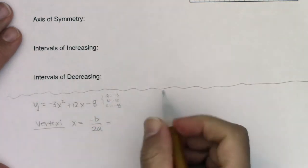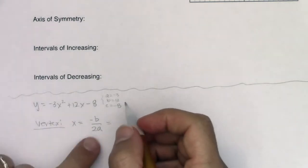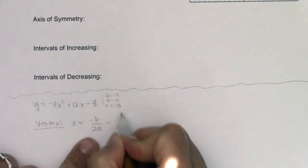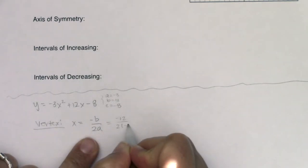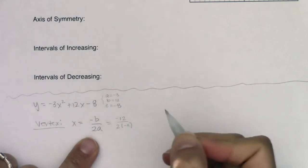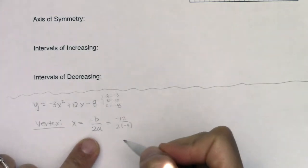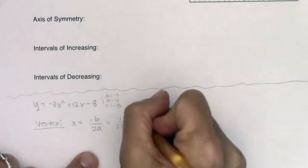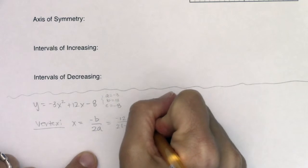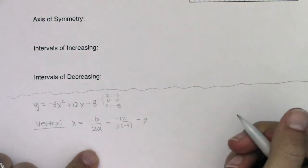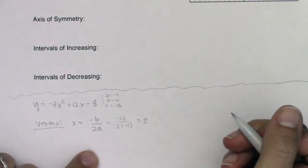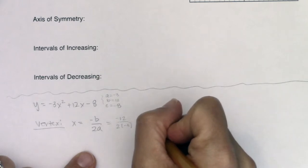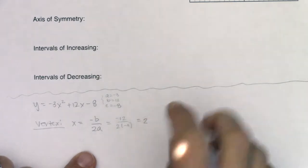Plugging in, I get negative 12 over 2 times negative 3. When I look at that ratio, it turns out to be a nice whole number, so I know that I have a vertex with an x-coordinate of 2.